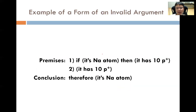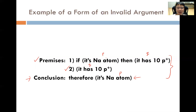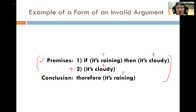Let's look at another example: if it is the sodium atom, then it has 10 protons. It has 10 protons — therefore it is the sodium atom. This is in the form of 'if P then Q, Q therefore P' — an invalid argument form. For an invalid argument, even if premises 1 and 2 are true, it does not necessarily follow that the conclusion must be true. However, there is nothing to say the conclusion cannot be true — in this case it happens to be true that if something has 10 protons it must be the sodium atom. It is just that this argument form is invalid because there are some cases where even if premises are true the conclusion does not follow.